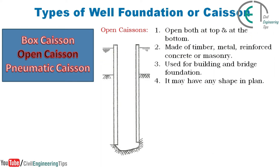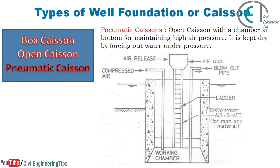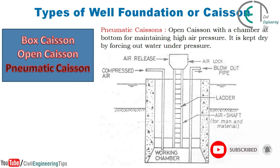Box caissons are used for weak breakwaters and sea walls. The second type is open caisson. These are open both at the top and at the bottom, made of timber, metal, reinforced concrete, or masonry, and used for building and bridge foundations. They may have any shape in plan. The third type is pneumatic caisson — an open caisson with a chamber at the bottom for maintaining high air pressure, kept dry by forcing out water under pressure.